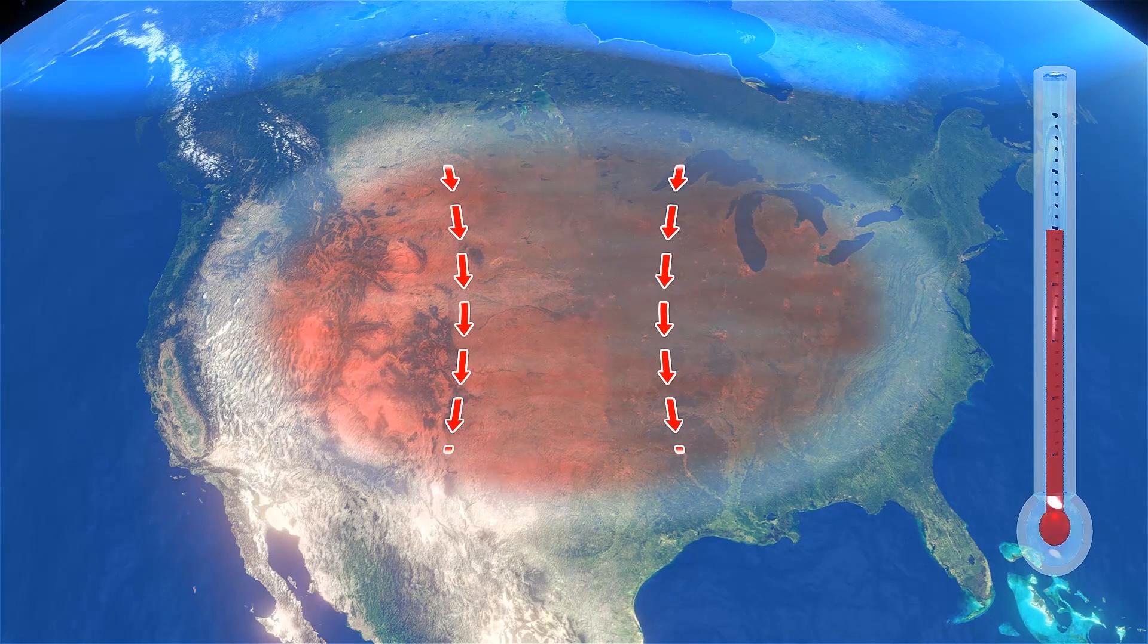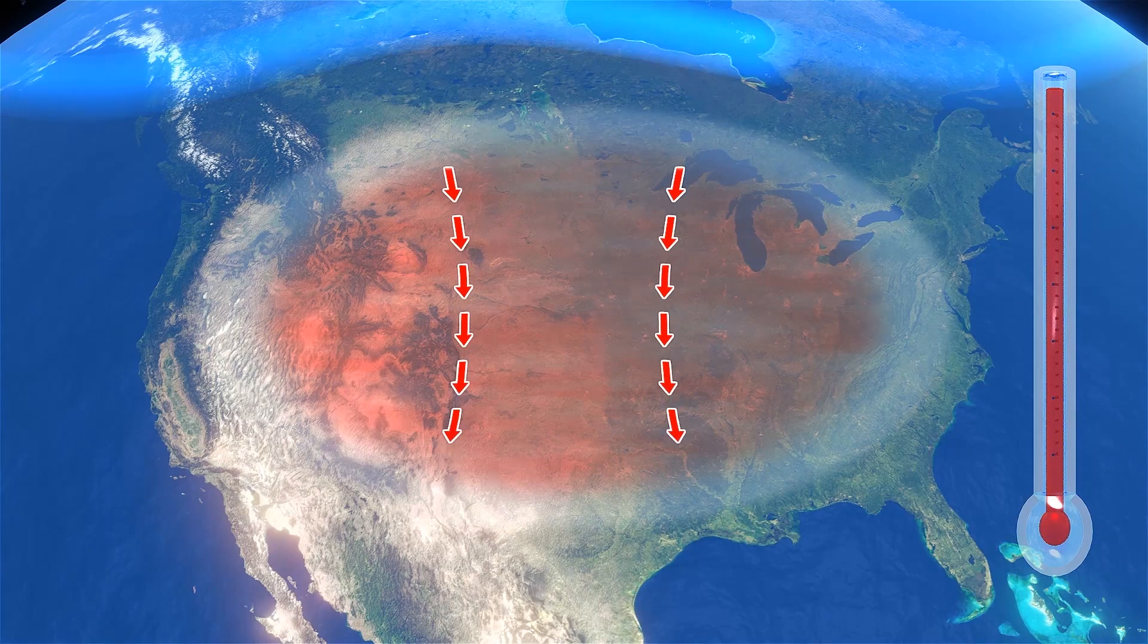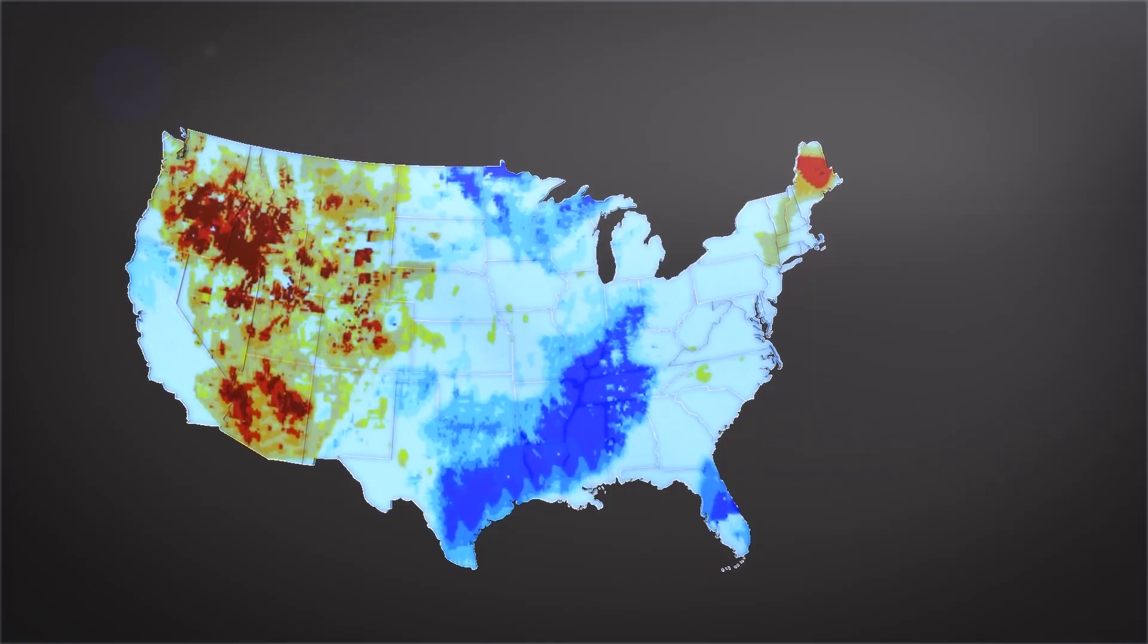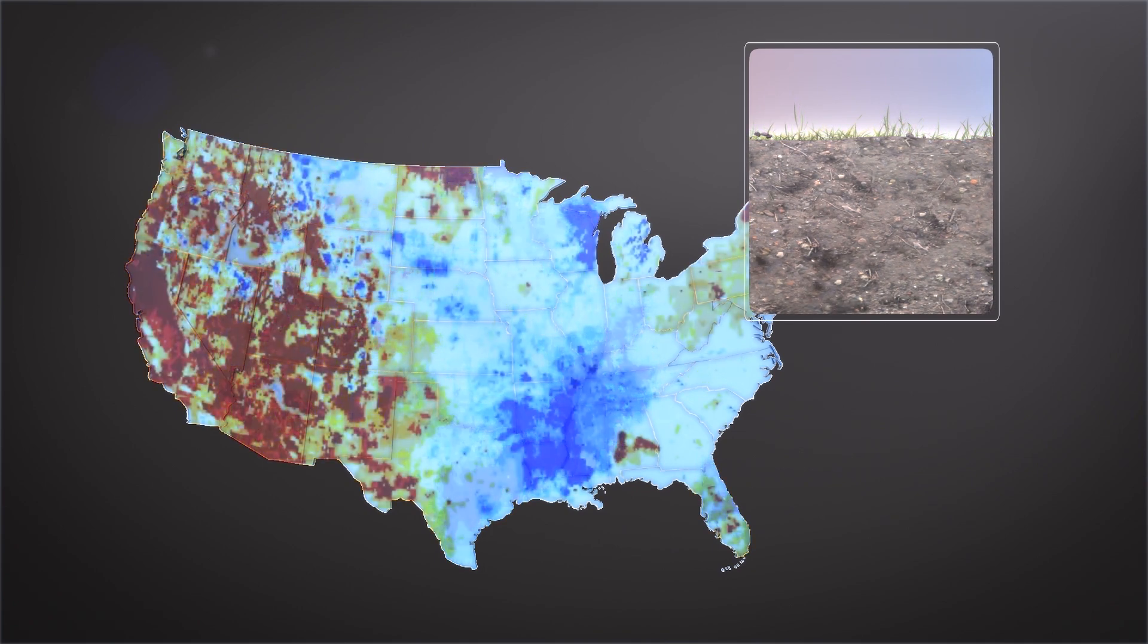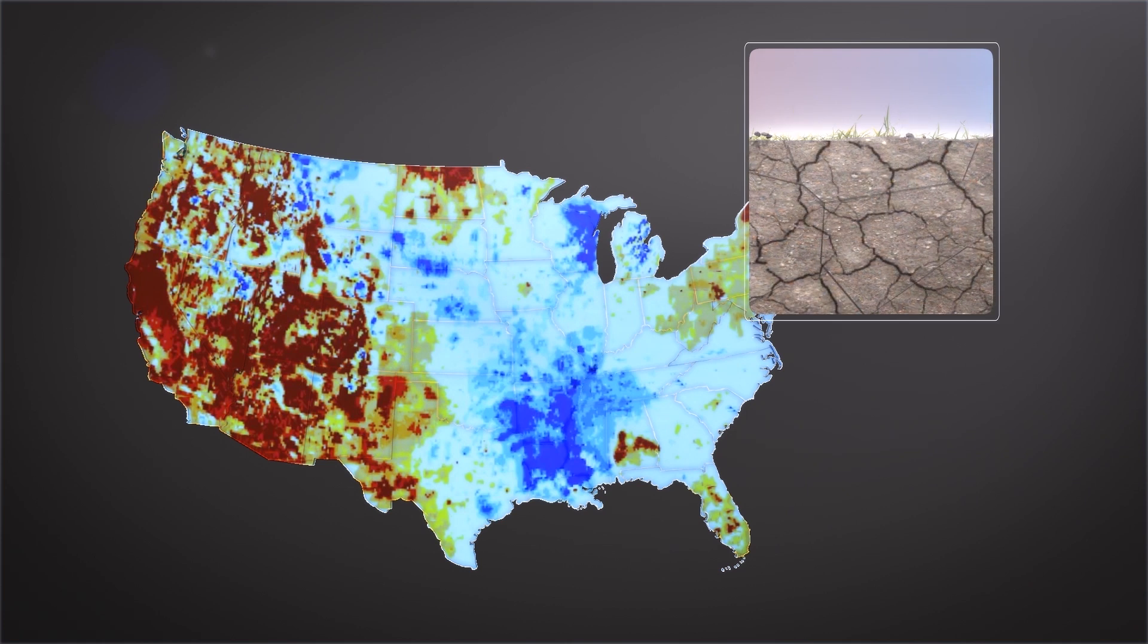That high pressure works in combination with a two-decade dry spell that has sucked moisture out of soil in much of the western United States. Usually, some of the sun's heat evaporates moisture in the soil, but according to the Associated Press, scientists say the western soil is now so dry that the energy is instead used to make the air even warmer.